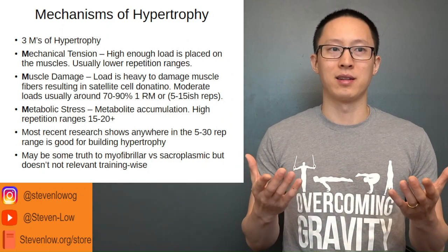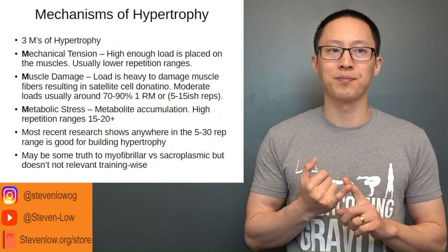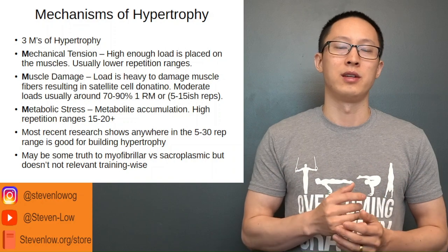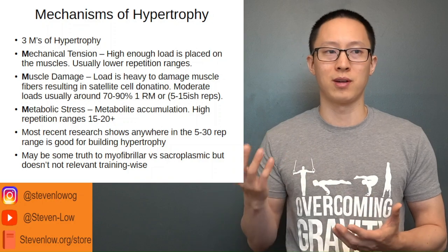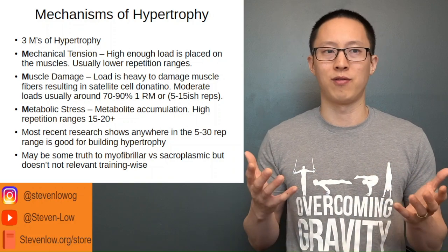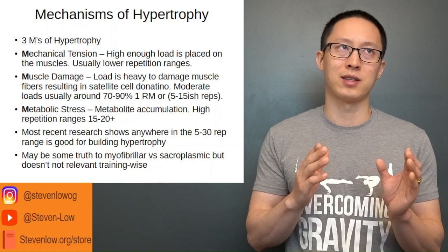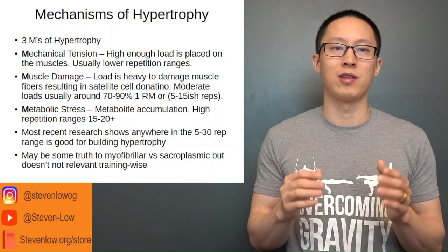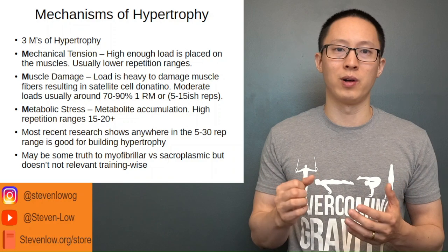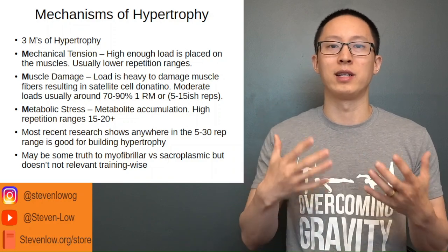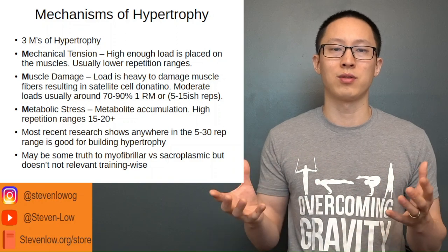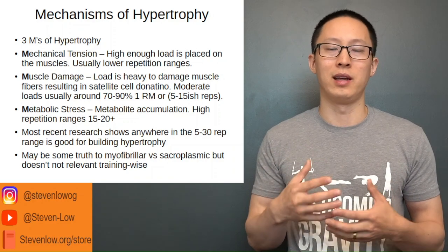The three main mechanisms of hypertrophy are mechanical tension, muscle damage, and metabolic stress. Mechanical tension is where high enough loads are placed on the muscles — usually in lower rep ranges like three to five RM, since one to two reps makes it hard to get enough volume to progress. Muscle damage occurs in moderate rep ranges, usually five to 15 reps at about 70–90% of one rep max. During the eccentric or muscle-lengthening phase, the weight is heavy enough that myosin heads are pulled off the actin, creating muscle damage. Satellite cells surrounding the muscle donate their nuclei to the muscle cells, and the extra myonuclei increase protein synthesis.